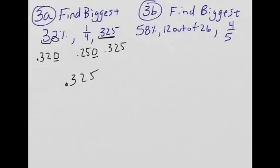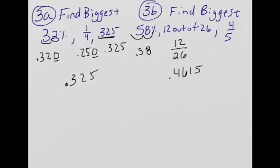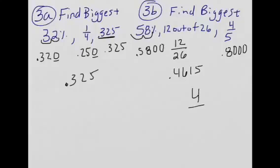We're going to do the same thing. Take 58% and change it to a decimal — that's 0.58, by moving the decimal two places to the left. 12 out of 26 means we take 12 and divide by 26 on our calculator, which gives us 0.4615. And the last one is 4 divided by 5, which gives us 0.8. Adding zeros to compare: 0.5800, 0.4615, and 0.8000, which makes 4 fifths our biggest.